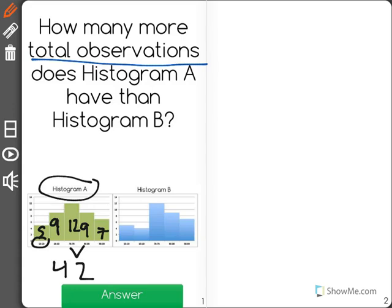Now I'll do the same with histogram B. One by one, I will count how many observations the different bars have until I finish, and then I'll add them all up and see that these have a value of 9 plus 12 would be 21 plus 16 is 37.